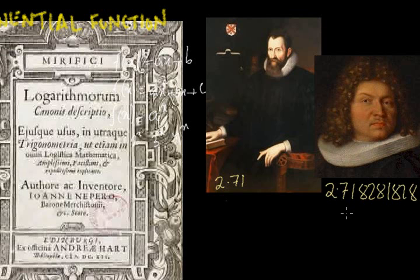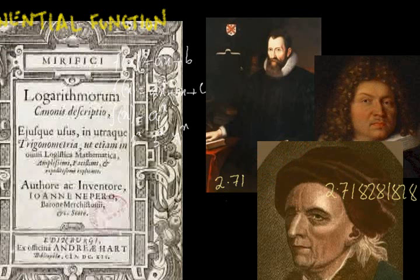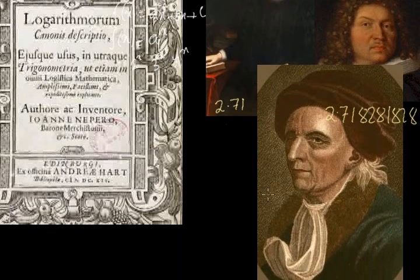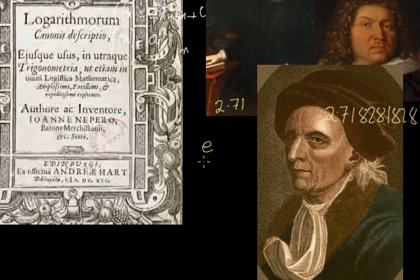This most famous number in the world was not officially named until 1727. It was named by Leonard Euler — perhaps the greatest mathematician of all time. Euler was actually a student of Jacob's brother, Johann Bernoulli. He gave this number the letter E. Many people think he was conceited and named it after himself, since Euler starts with E — but that's not the whole story.